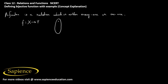Suppose the set X contains the numbers 1, 2, 3, and 4, and the set Y contains the alphabets a, b, c, d, e, and f. Suppose a relation f is such that 2 is related to c and 2 is related to d also.